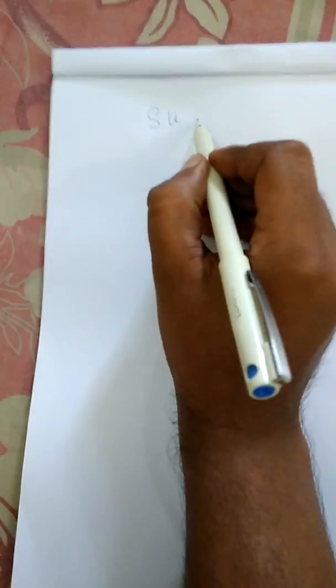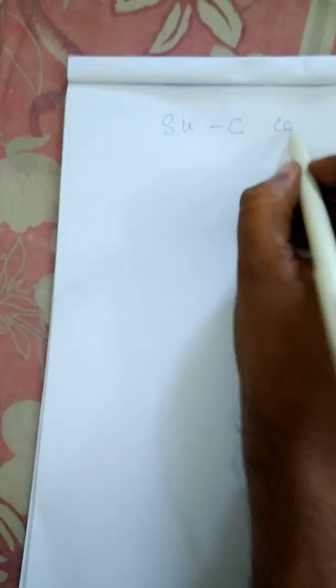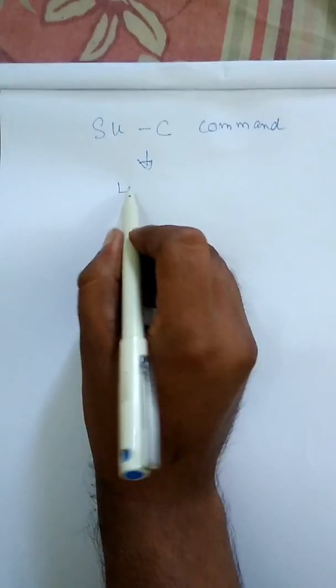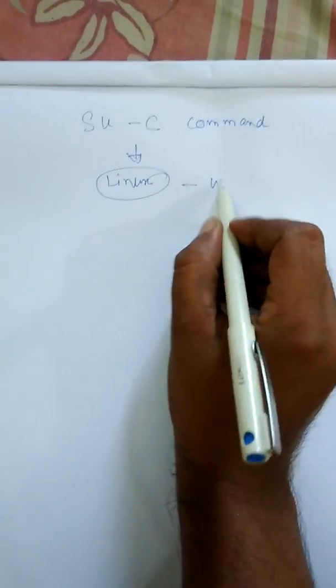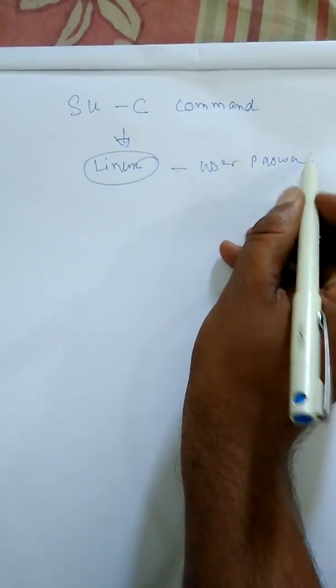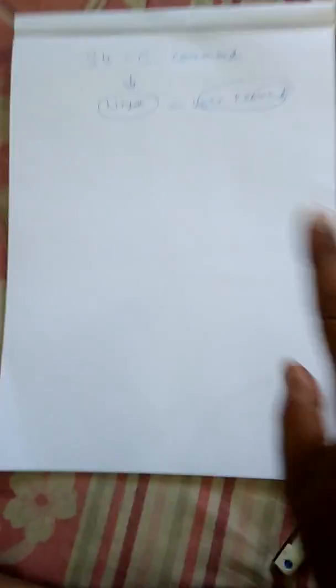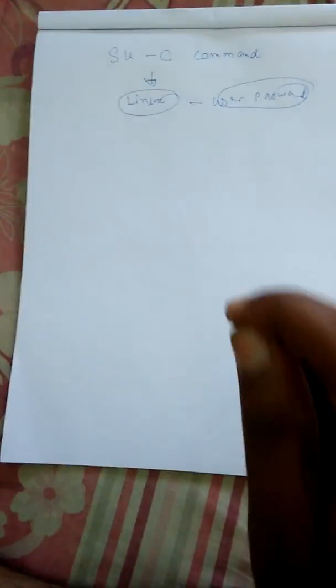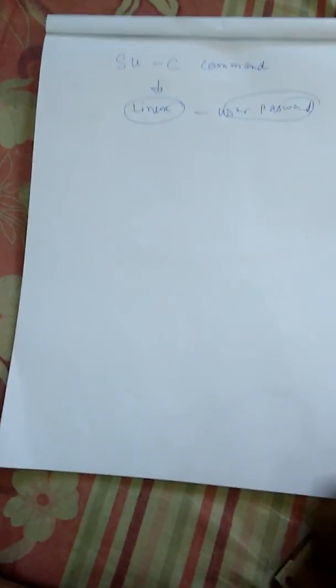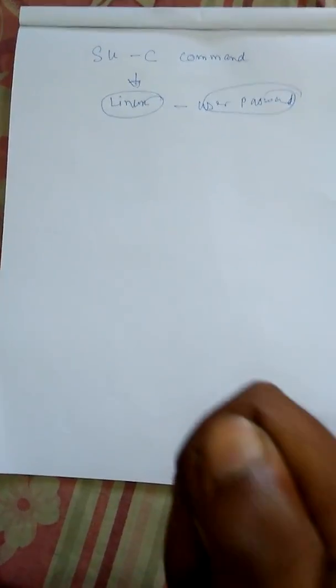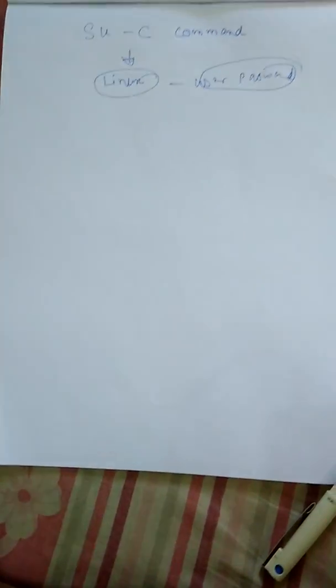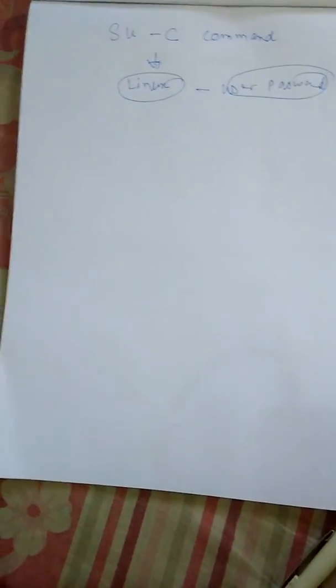In newer Linux flavors, the su command can be used similarly to sudo. If you are using the su command with the -c option — su -c command — then Linux will prompt you to enter the user password. So to summarize: if you use the su command, you enter the root password; if you use sudo, you enter the user password. With su you can switch users, but with sudo you cannot.